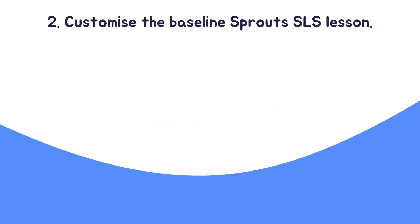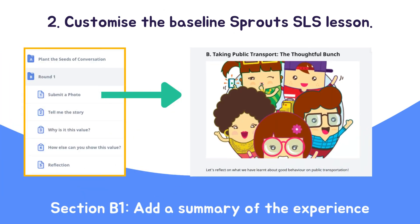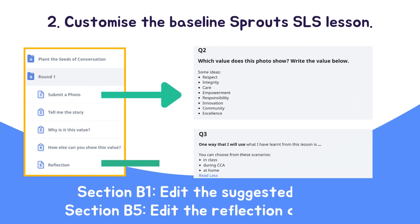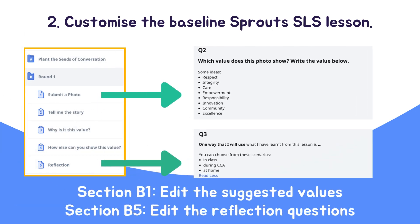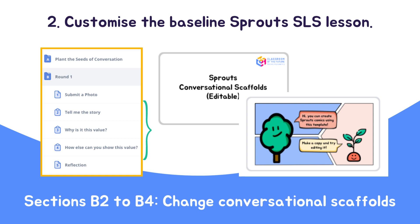Next, teachers can customize the Baseline Sprouts SLS lesson. Some ways to customize are: to add in a short summary of the experience students are reflecting on, edit the suggested list of values or reflection questions, or change the conversational scaffolds.